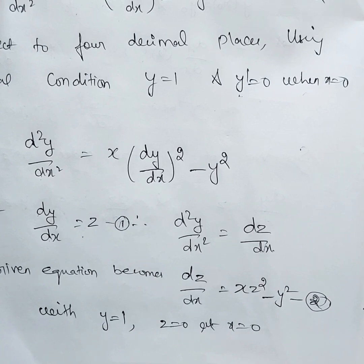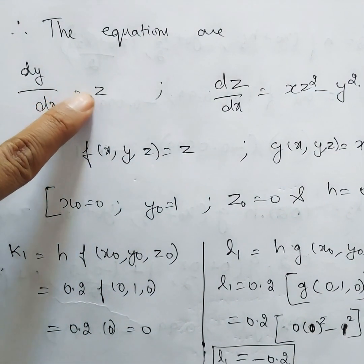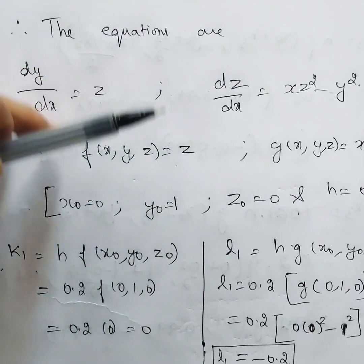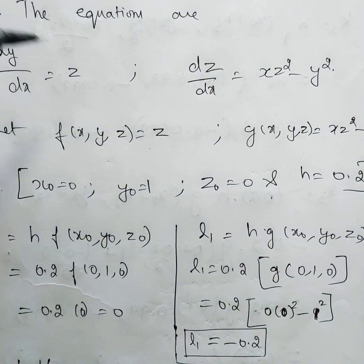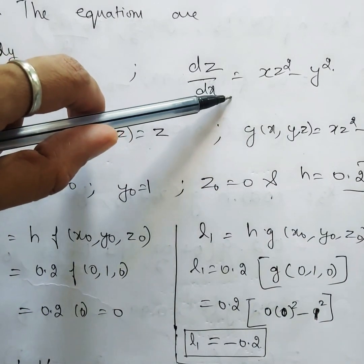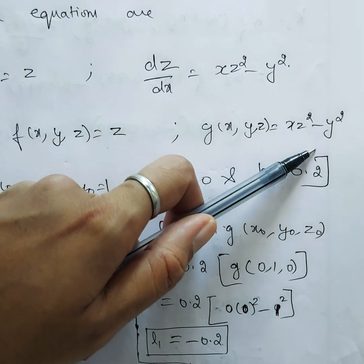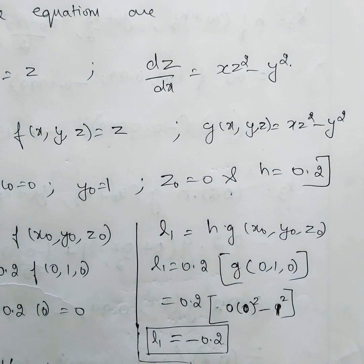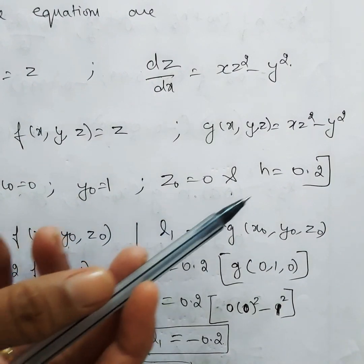We name dy/dx equals z as f(x, y, z) — the first function, which is always z by substitution. And dz/dx is named g(x, y, z), which here equals x·z² minus y². Initial values: x-naught equals 0, y-naught equals 1, z-naught equals 0, and h equals 0.2, since we go from x equals 0 to x equals 0.2.